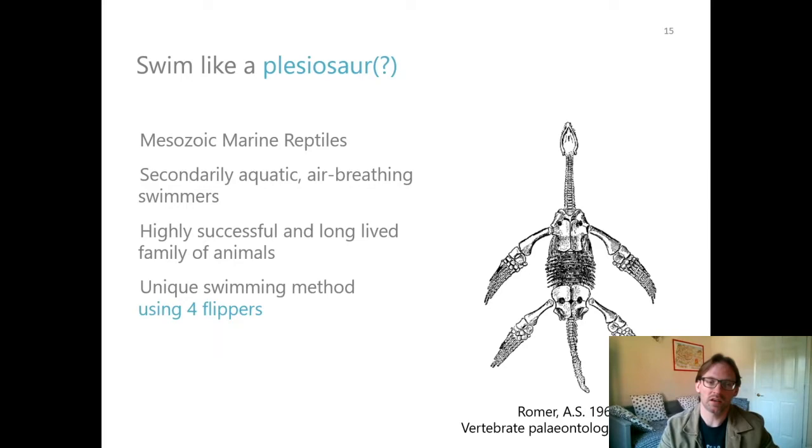So first we should figure out what a plesiosaur is. It was a mesozoic marine reptile. It was secondarily aquatic, so like a whale, its ancestors were air breathing on the land and they went back into the water again.